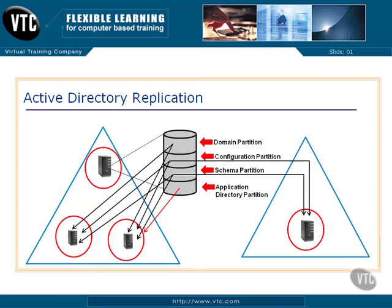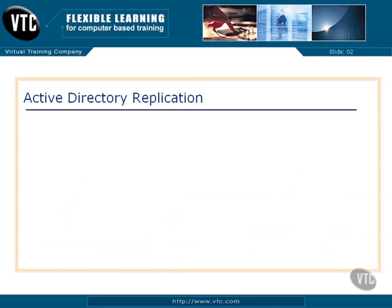This is all great except, as you can see here, there's a lot of replication — a lot of stuff moving through the network. This can become problematic if there is a slow link between servers. What we can do in that instance is control replication by putting these servers in different sites. Let's take a look at what that looks like.